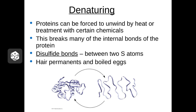Denaturing is also a problem in cases of high sustained fever. If you get sick and have a really high fever for a long time, the proteins in your blood and in your brain can begin to denature. That can cause organ failure. That's the reason that doctors will often try to bring a fever down by dunking someone in an ice bath or putting ice packs on the body — to break that cycle and prevent denaturing. So denaturing is a powerful tool, and also something you have to watch out for when you're sick.